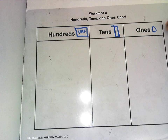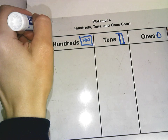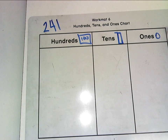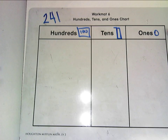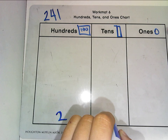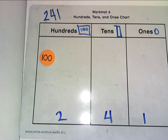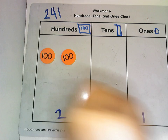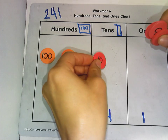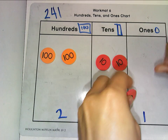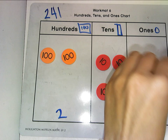Let's say I have the number 241. Think about that unit form: two 100's, four 10's, and one 1. So I'm going to get two disks for 100 — 100, 200 — then four 10's — 10, 20, 30, 40 — and then my 1.